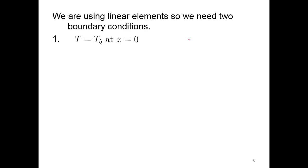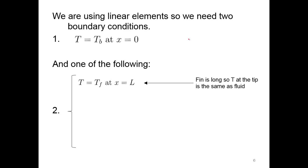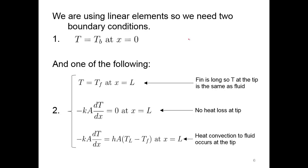We're using linear elements, so we need two boundary conditions. One boundary condition is at the base: at x equals zero is the temperature at the base. For the second boundary condition, we have one of three options. First, we know the temperature of the fluid at the tip of the fin — it's constant at the fluid temperature, meaning the fin is long enough that there's no additional temperature increase at the tip. Second, no heat loss at the tip: the temperature gradient dT/dx equals zero, so the tip acts as insulation. Third, we can have heat convection to the fluid at the tip, where conduction reaches that last element and then convection transfers from that element to the surrounding fluid.